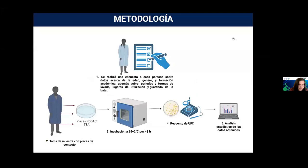La metodología fue llevar a cabo una encuesta a cada persona sobre datos acerca de edad, género, formación académica, y además algunas preguntas sobre el periodo y formas de lavado de las batas y los lugares de utilización de las mismas. También se tomaban muestras con placas de contacto — en este caso placas Rodac con medio de cultivo. Luego se llevaron a incubación por cuarenta y ocho horas, se realizó el recuento de unidades formadoras de colonia y se hizo un análisis estadístico.